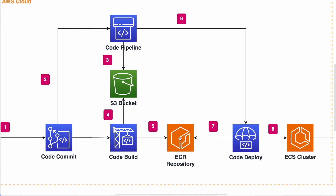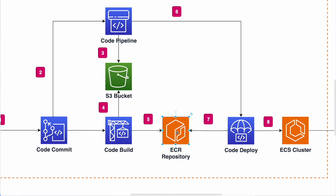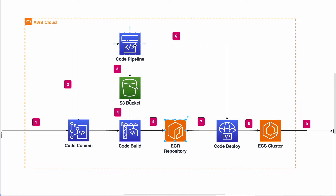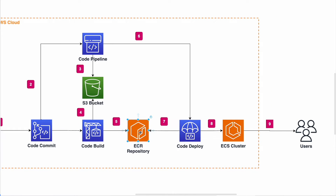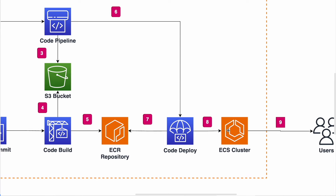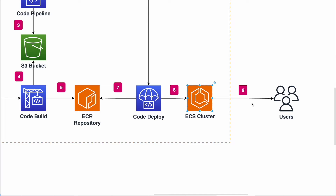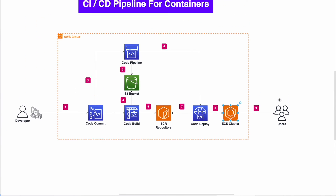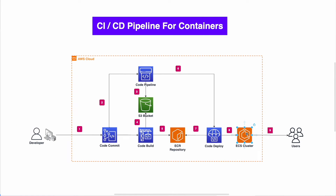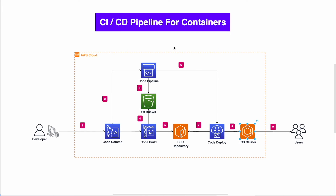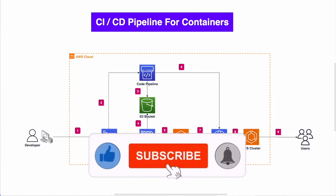CodeBuild then pulls that code artifact, builds a Docker image, and pushes it to Elastic Container Registry (ECR) in AWS. Once CodePipeline reaches the final step, it triggers CodeDeploy, which pulls the image from ECR and deploys it to an EKS cluster — our compute engine that runs the image so users can interact with it. This is a very important step for developers wanting to become DevOps engineers.